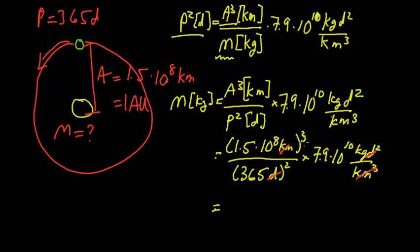1.5 times 10 to the 8, we cube that. We multiply by 7.9 times 10 to the 10. We divide by 365 squared. And we get about 2 times 10 to the 30 kilograms. And that will be the mass of the sun.